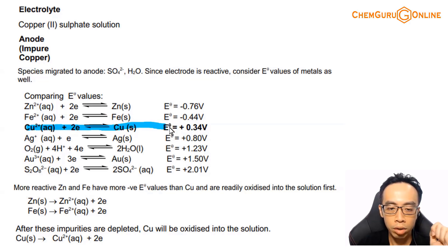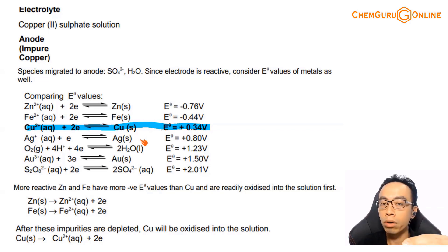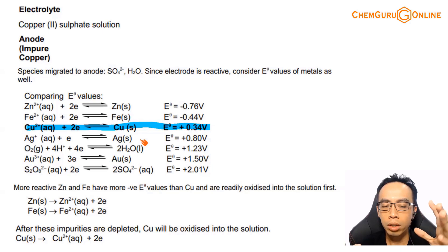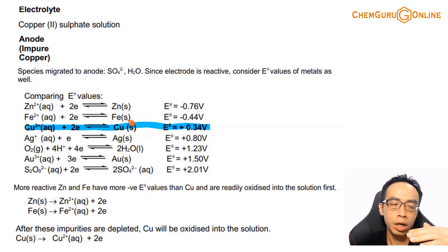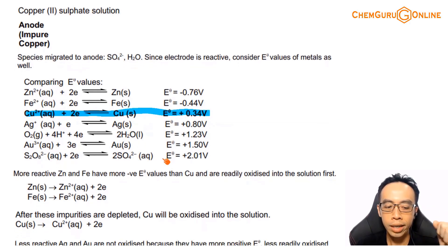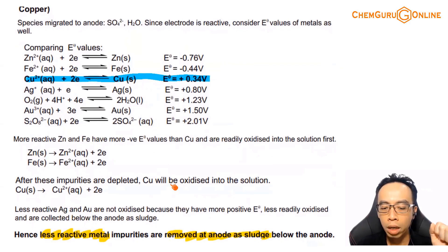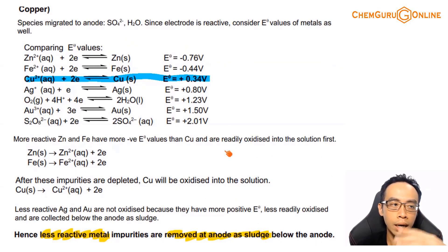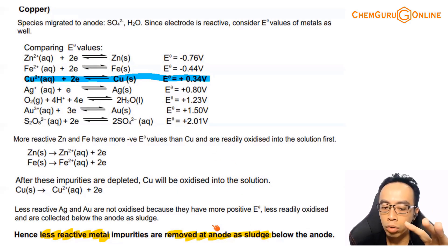Once copper gets oxidised, this stage lasts for a very long period of time because copper makes up about 90% of the impure copper. As copper dominates the oxidation process, the less reactive metals like silver and gold have no opportunity to be oxidised — they simply get detached from the anode and drop down to the bottom, collected as sludge together with non-conducting minerals. These less reactive metals are thus removed at the anode.